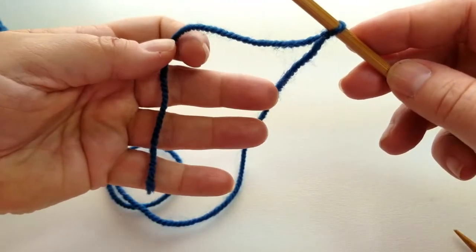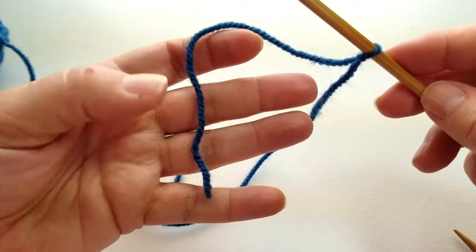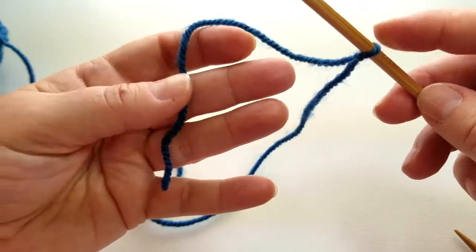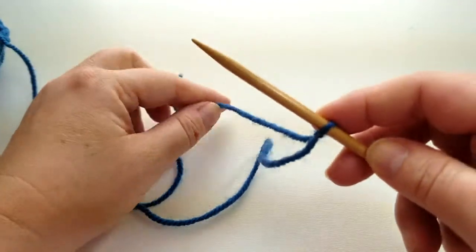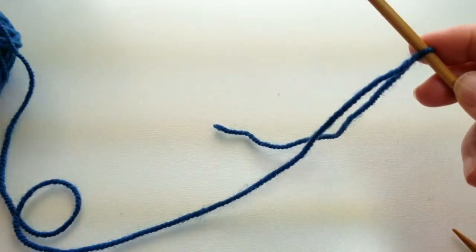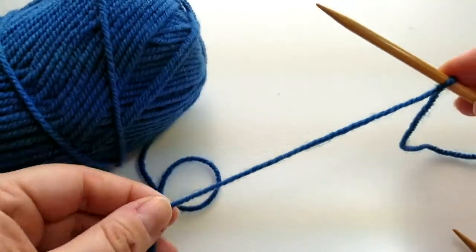This end of the yarn, the shorter end, this is called your tail. And you want to try and keep that out of your way. And then the other end that's attached to the ball is your working yarn.